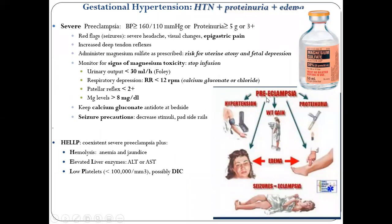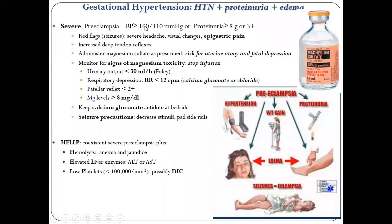We have to give magnesium sulfate — called mag sulfate. If maternal hypertension is mild, go for observation. If severe — blood pressure increasing at least 30 to 40 mmHg — and it finally leads to eclampsia where blood pressure is more than 160/110 systolic with convulsions or seizures, we call it eclampsia. Administer magnesium sulfate as prescribed. Risk: uterine atony and fetal depression. Monitor for signs of magnesium toxicity.